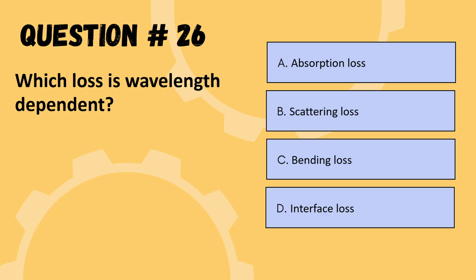Next question: which loss is wavelength dependent? Options are absorption loss, scattering loss, bending loss, or interface loss. The correct option is B: scattering loss.